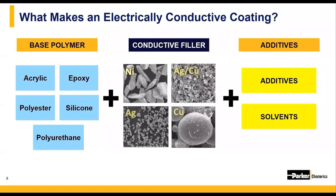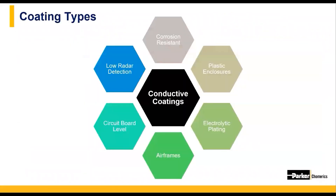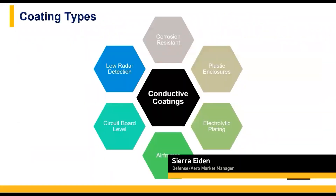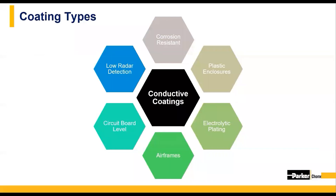Coatings also benefit from additives and solvents that can improve adhesive properties, dispensability, and pot life. There are several reasons why you would look at using a conductive coating: maybe your customer told you that your electronics package is overweight, or your multi-component circuit board has crosstalk between chips, or maybe you went through environmental testing and found a mysterious powdery white substance all over your gasketed areas.